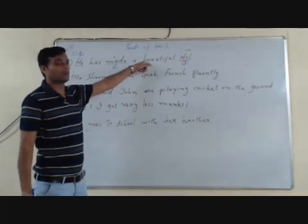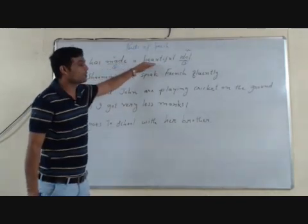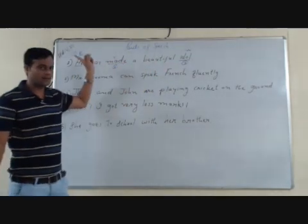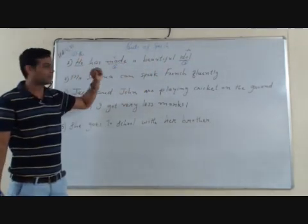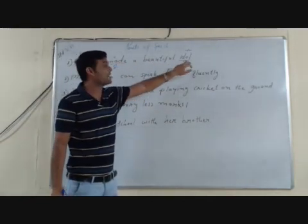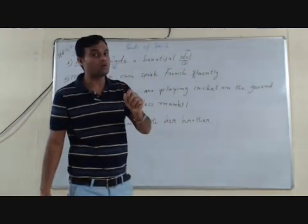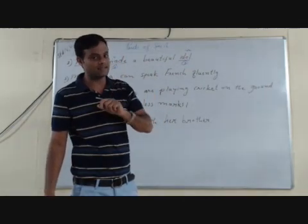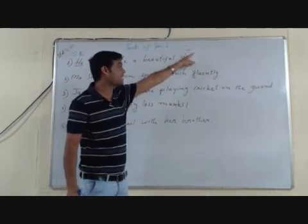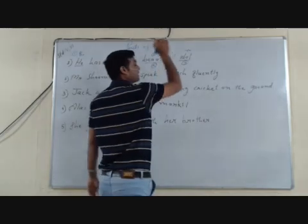Now this word 'beautiful' — he has made a beautiful idol. The word 'beautiful', is it telling about 'he' the pronoun? No. Is it telling about the verb 'made'? No. The word 'beautiful' tells something about the noun 'idol'. A word that tells something about a noun or pronoun in the sentence is known as an adjective. So 'beautiful' tells something about 'idol', and 'idol' is a noun. So 'beautiful' is an adjective.